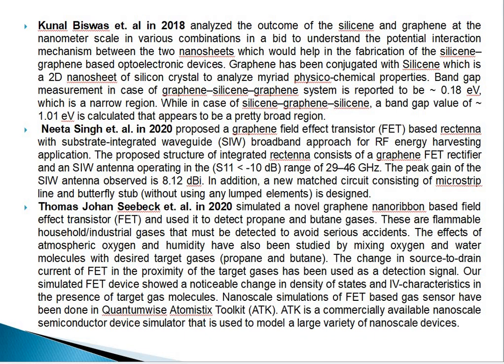And the last one, also in 2020: Formzon simulated a novel graphene nanoribbon-based field effect transistor and used it to detect propane and butane gases — permeable household and industrial gases that must be detected to avoid serious accidents. Nanoscale simulation of the FET-based gas sensor was done in QuantumWise Atomistic Toolkit (ATK), a commercially available nanoscale semiconductor device simulator used to model a large variety of nanoscale devices. This is the end of the literature survey of graphene.